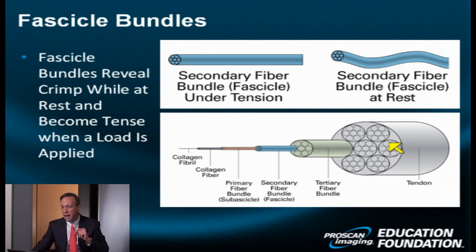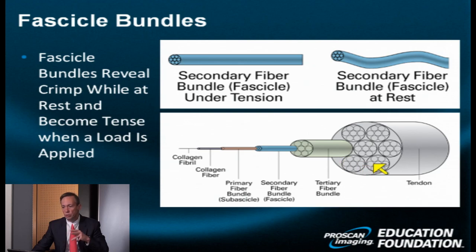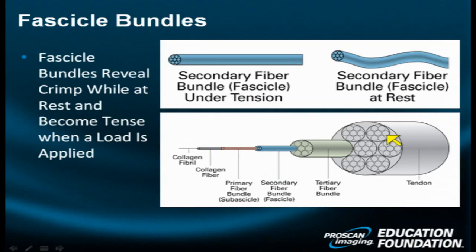I'd like to begin by showing you some of the micro-anatomy of a tendon. Imagine this is the rotator cuff tendon, which is actually a series of tendons and a myotendinous complex, as well as the capsule and a few other structures. Focusing on the tendon itself, it's composed of a series of bundles. Imaging has gotten so good that we can look inside these structures and see the individual sub-bundle anatomy, allowing us to see degeneration or intrasubstance injury in ways we could never see before. We begin with a tertiary bundle, which is composed of secondary fiber bundles called fascicles.